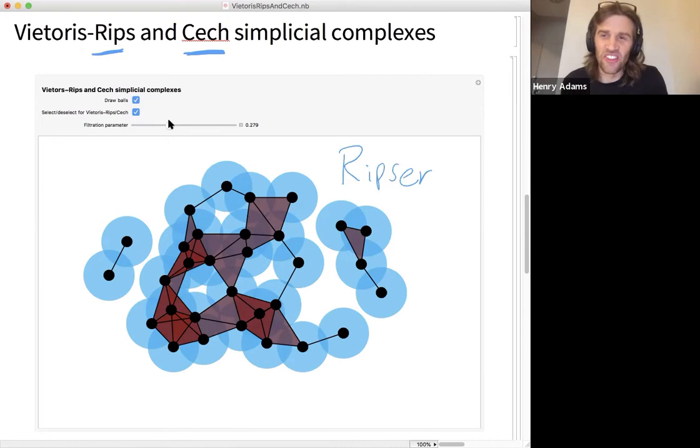Last final plug is I'll say that Vietoris-Rips complexes, yeah, they're really an approximation tool for Čech complexes, but they motivated a lot of nice theoretical questions, which is one of my main thrusts of the research aspect.